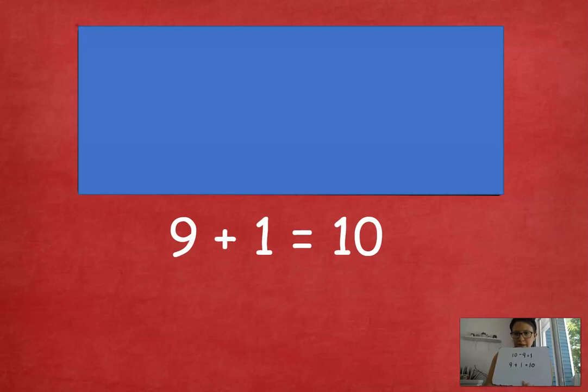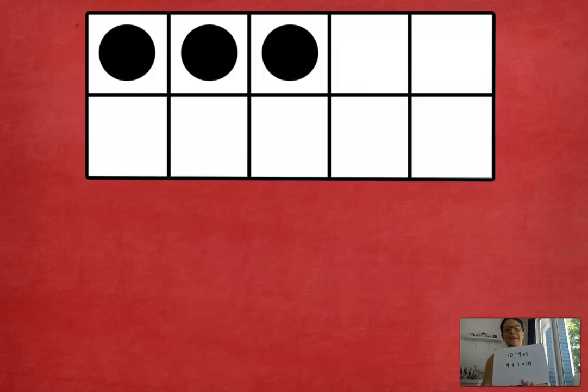Let's do the next one. Ready? Go ahead and write that addition and subtraction sentence. Let's see. There were 9 dots up there. One more to make 10. 9 plus 1 is 10, 10 minus 9 equals 1, 10 minus 1 equals 9. Excellent job. Let's try this one. It's going to disappear in 3, 2, 1. Write me that addition and subtraction sentence. Always getting to 10.